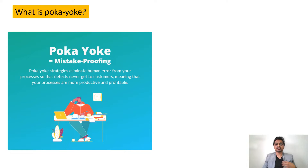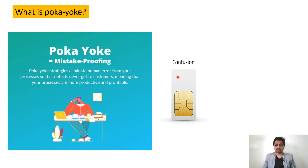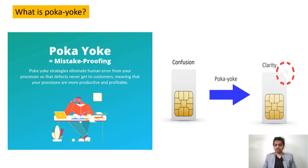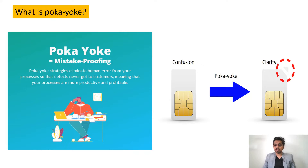Now how can we achieve that in fixture design? Let's see a simple example. This is a SIM card. If the SIM card is like this, we will have confusion about whether to fit it in this orientation, or flip it, or place it from this side. There are chances of human error — the card could get inserted in the wrong orientation. How can we avoid that? How can we apply Poka-yoke here?